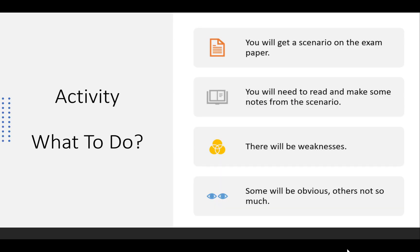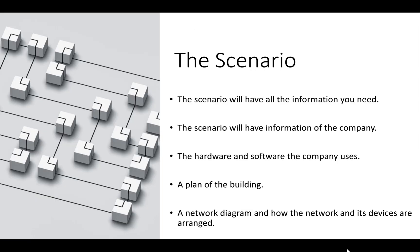So what do you actually do in the activity? You will get a scenario on the exam paper. You'll need to read it and make some notes — I recommend highlighting on the physical paper, and also jotting down notes in your Word document. I've done that on a few occasions: I have my Word document template open and simply jot down notes so I can go back, copy, paste, and change things. There will be weaknesses present — some will be obvious and others not so much.